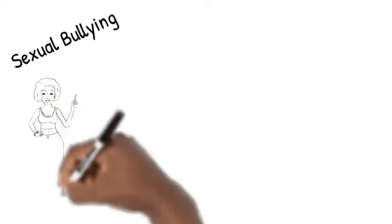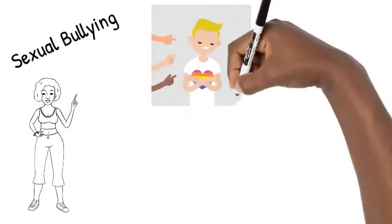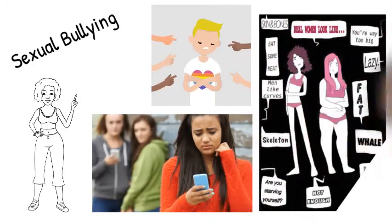Sexual bullying is anything that involves putting someone down for their body or appearance, who they like or are attracted to, or their gender for the purpose of making them feel bad. Examples include calling someone gay as an insult, body shaming, and pantsing.